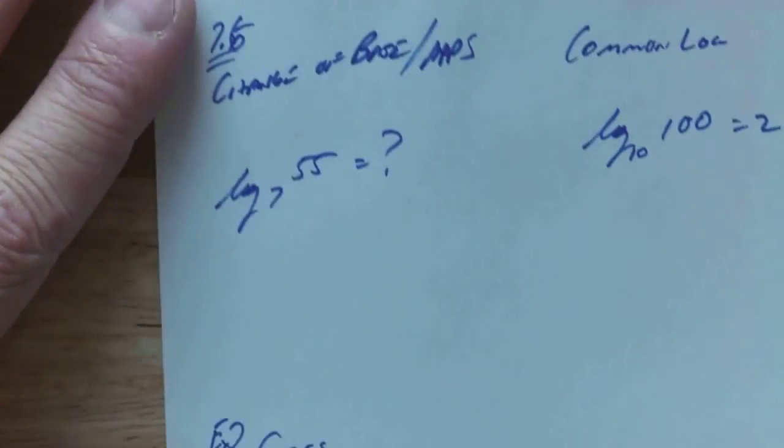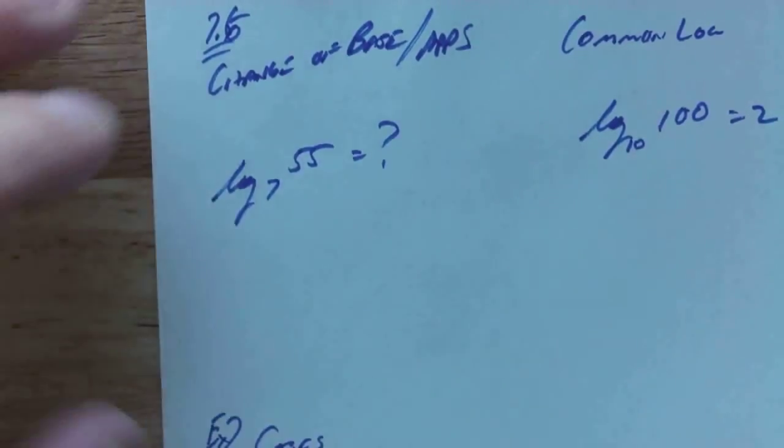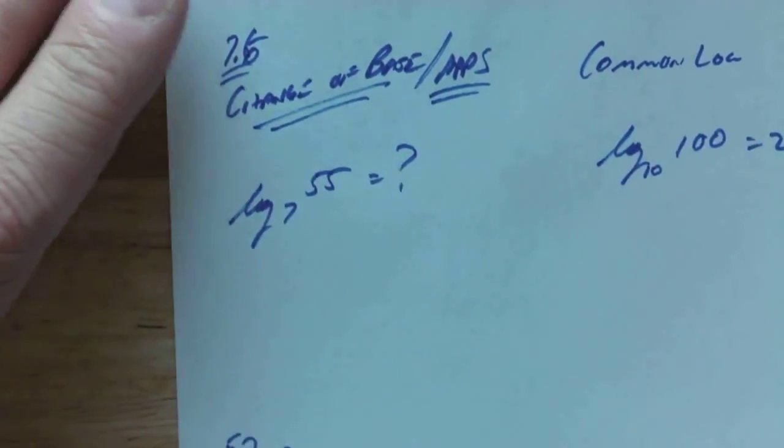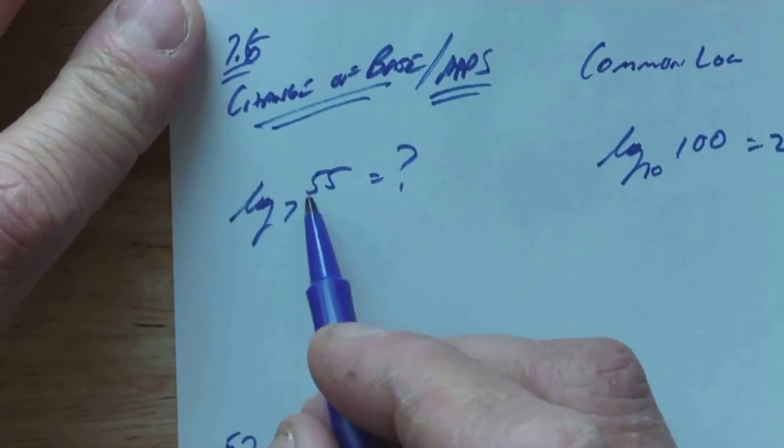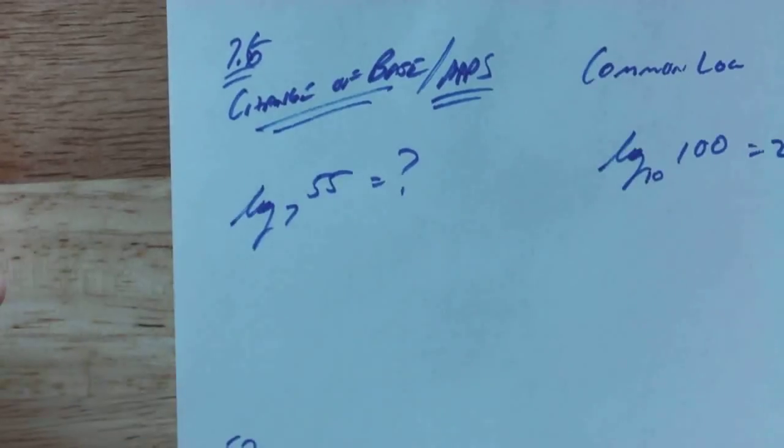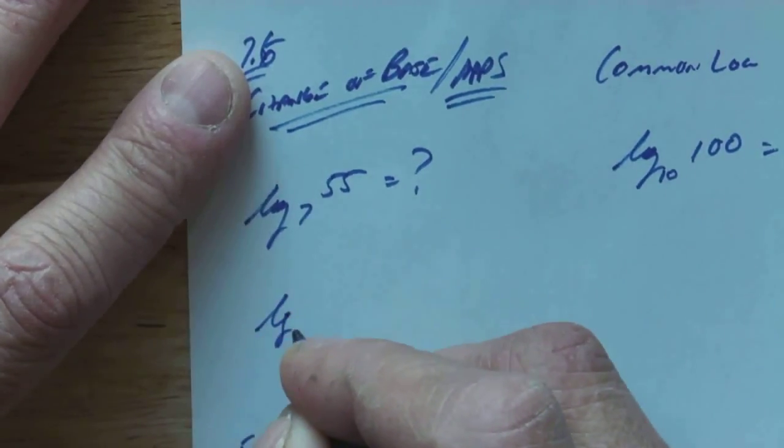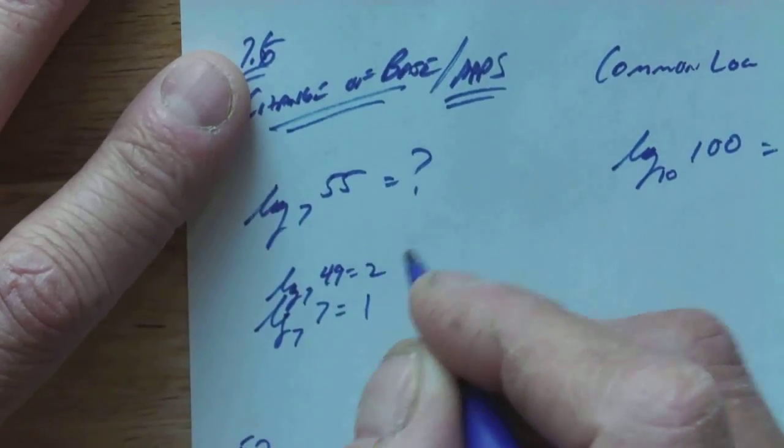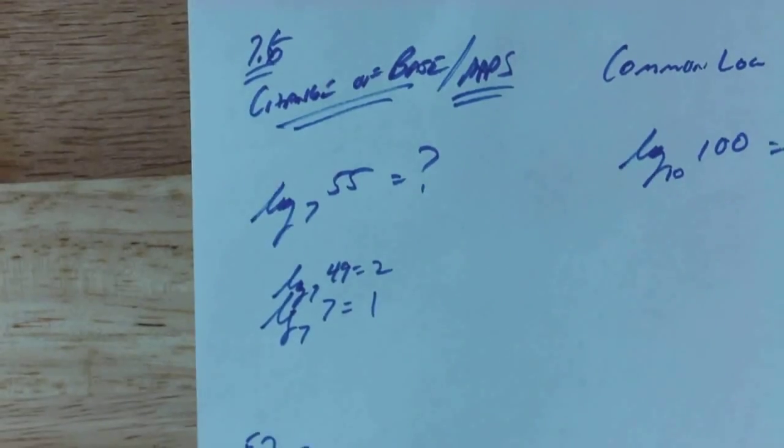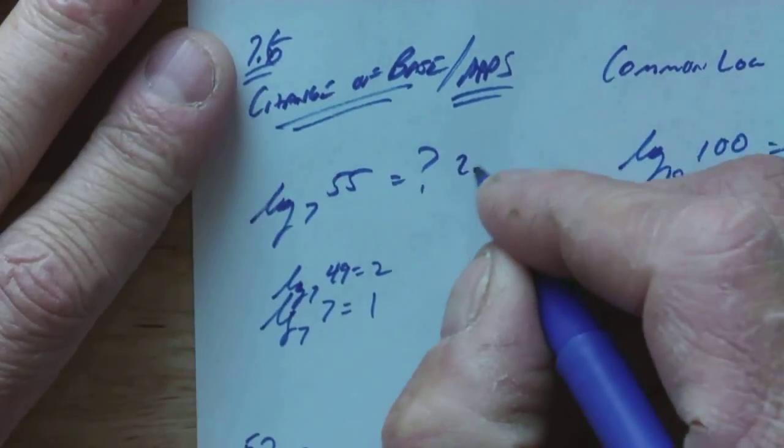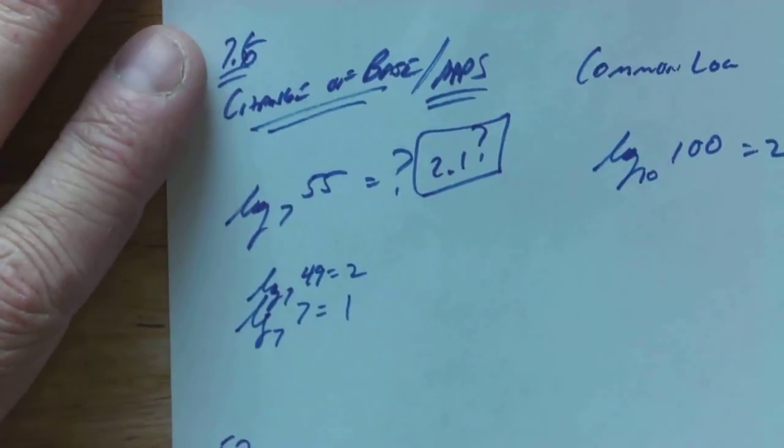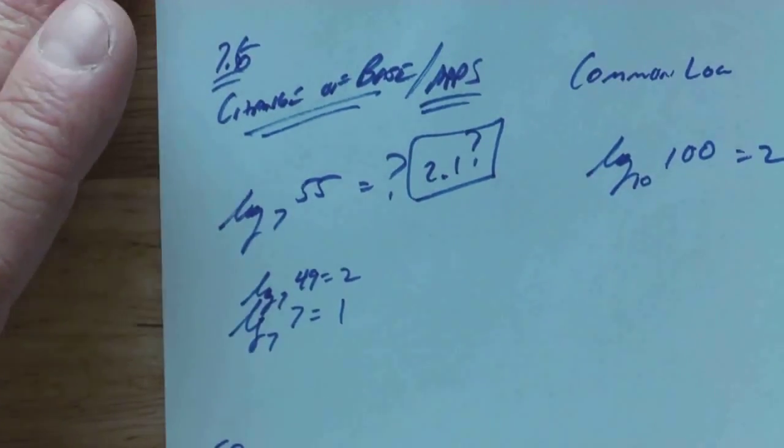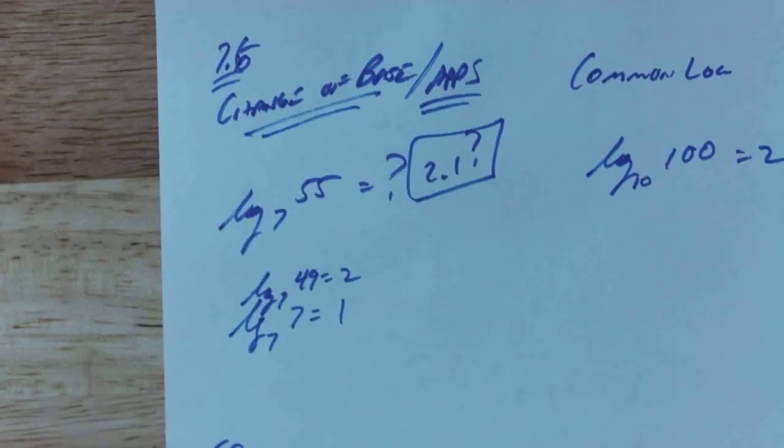Today, I want to go to probably what is the most important skill. We did all this to get to the most important skill. Change a base, and then do some applications. If I want to know log base 7 of 55, what is that? Well, I think we know that log base 7 of 7 is 1, log base 7 of 49 is 2, and then this one, since it's a little bit bigger than 49, it's going to be a little bit bigger. I'm saying maybe 2.1. I don't know. Because what we're looking for is the exponent. 7 raised to the 2.1 power gives me 55.